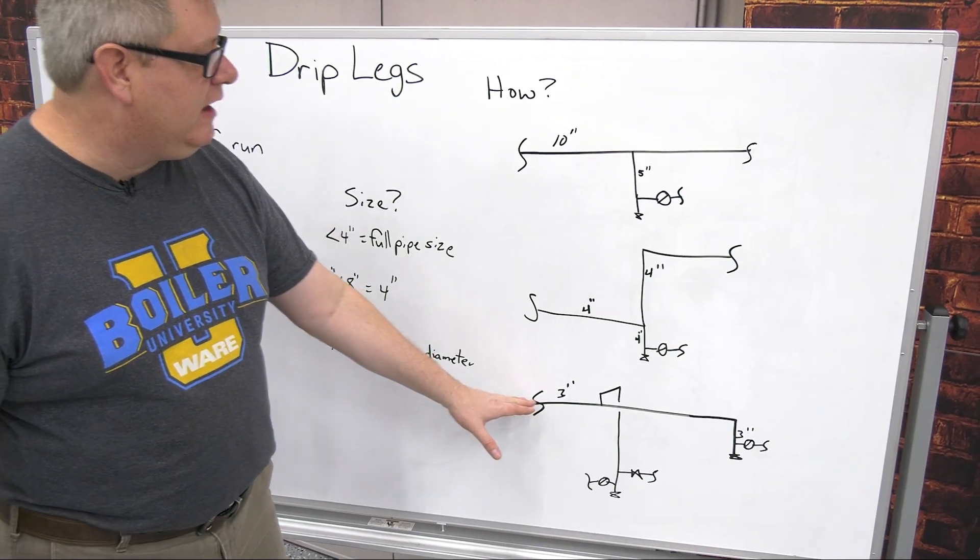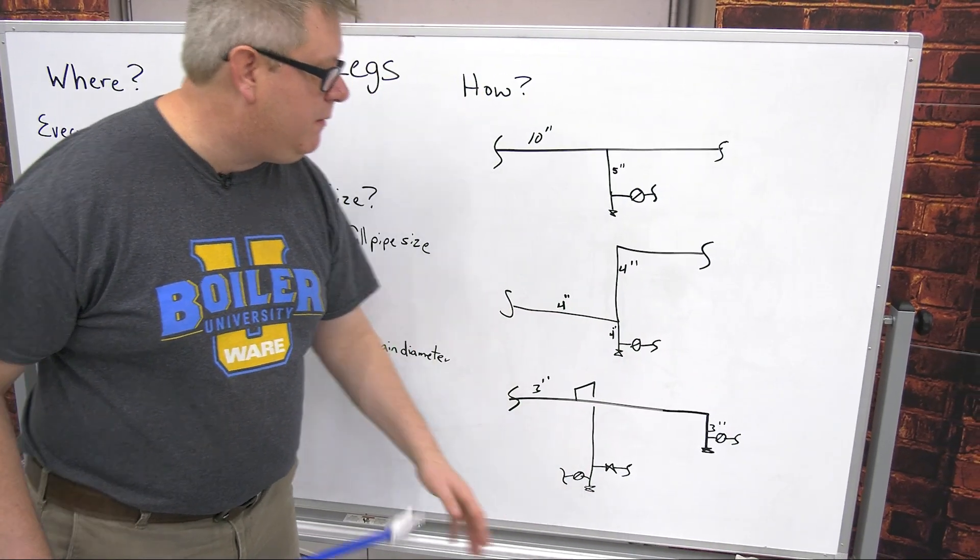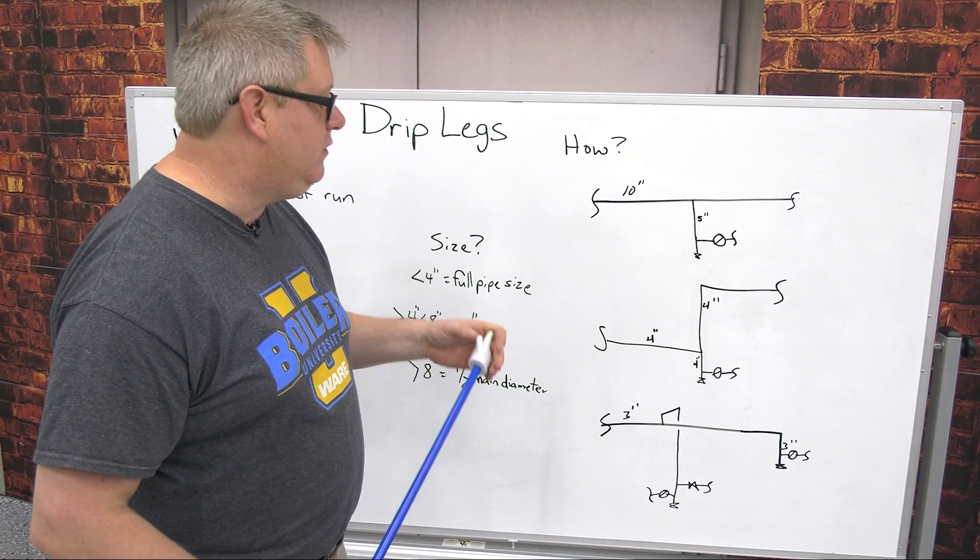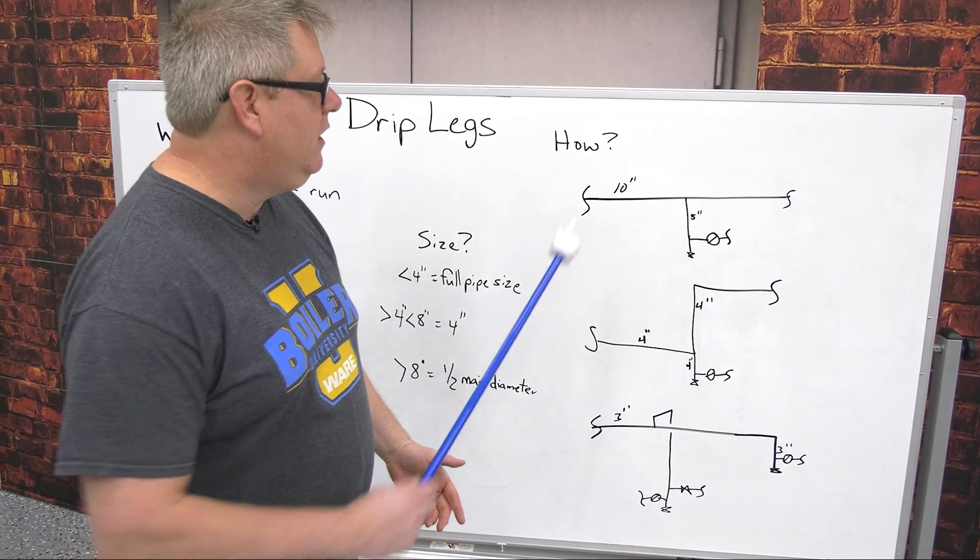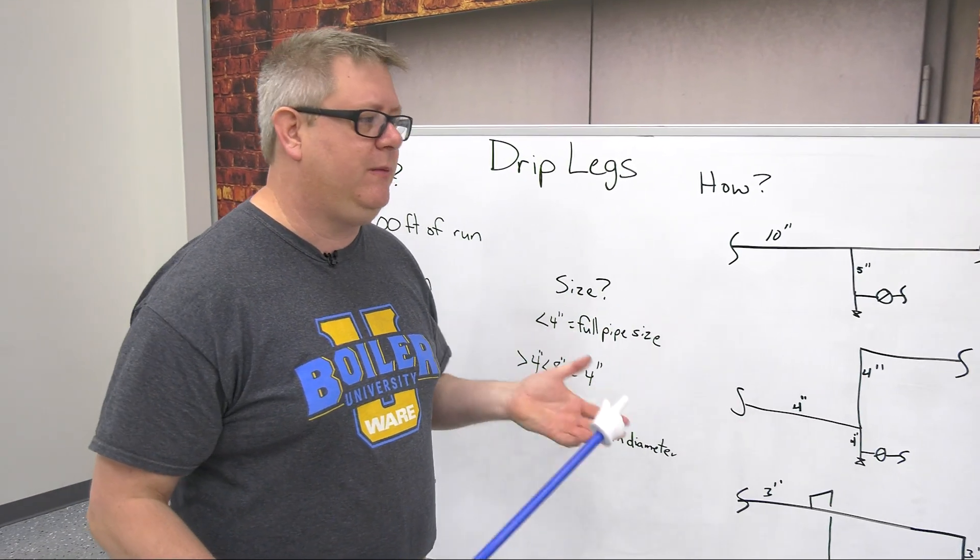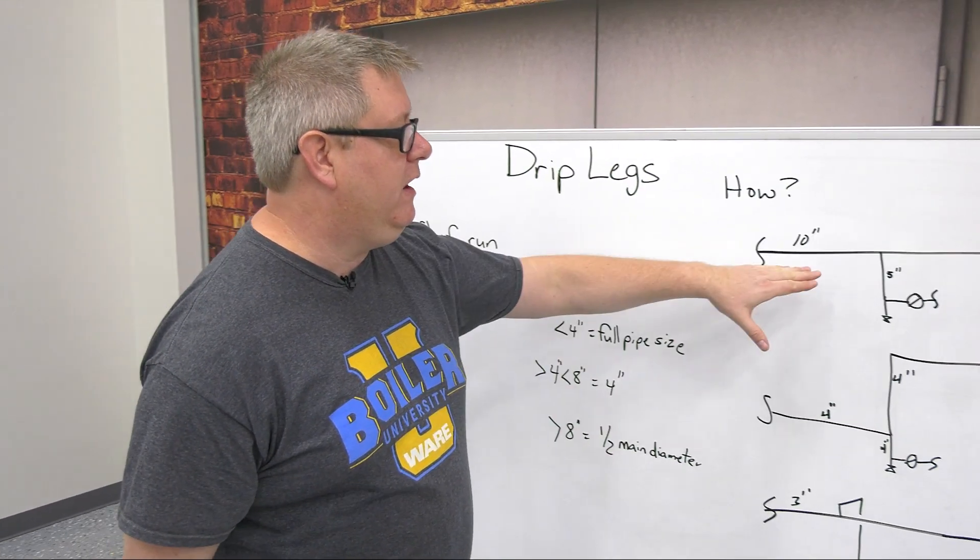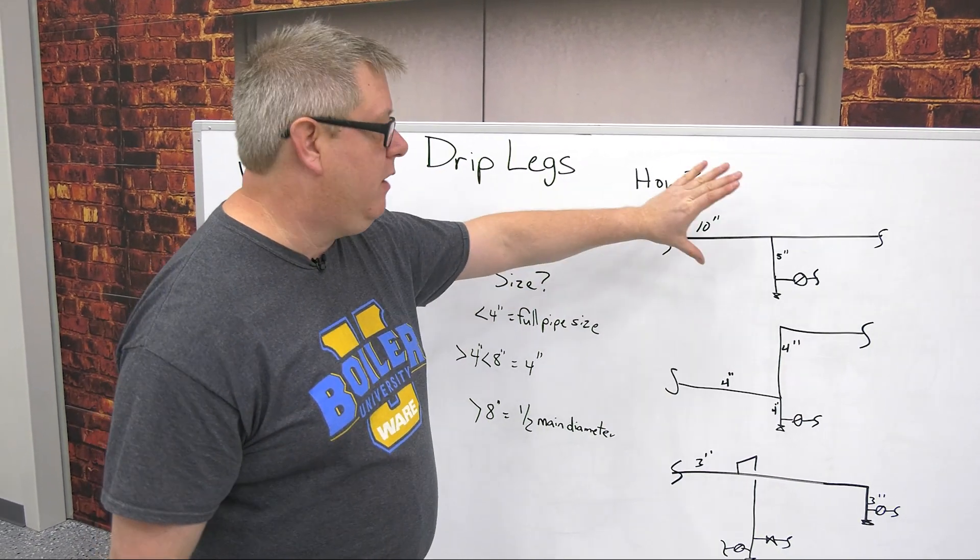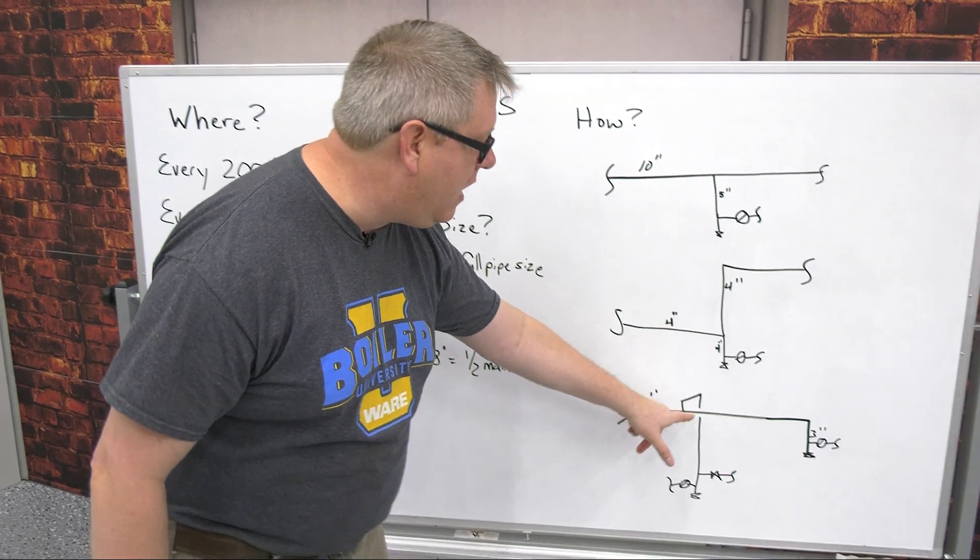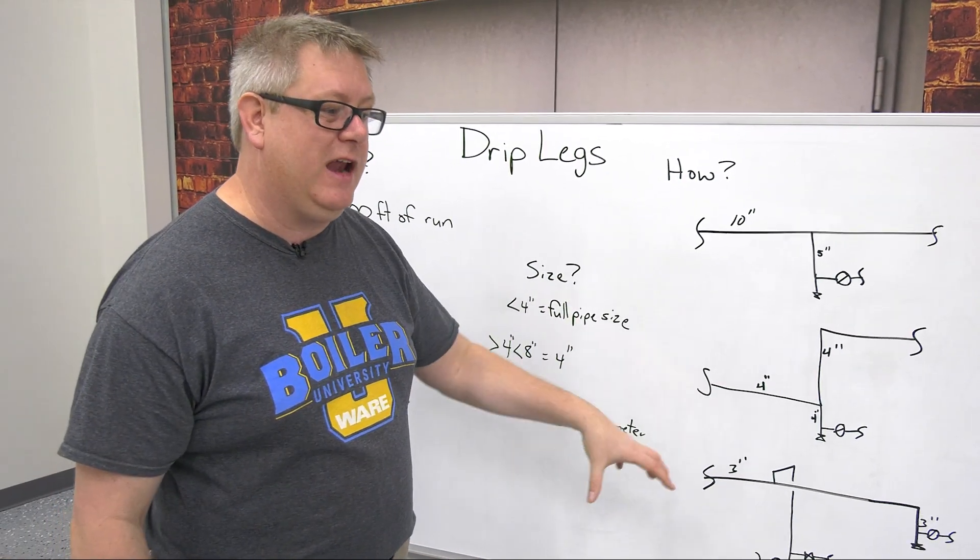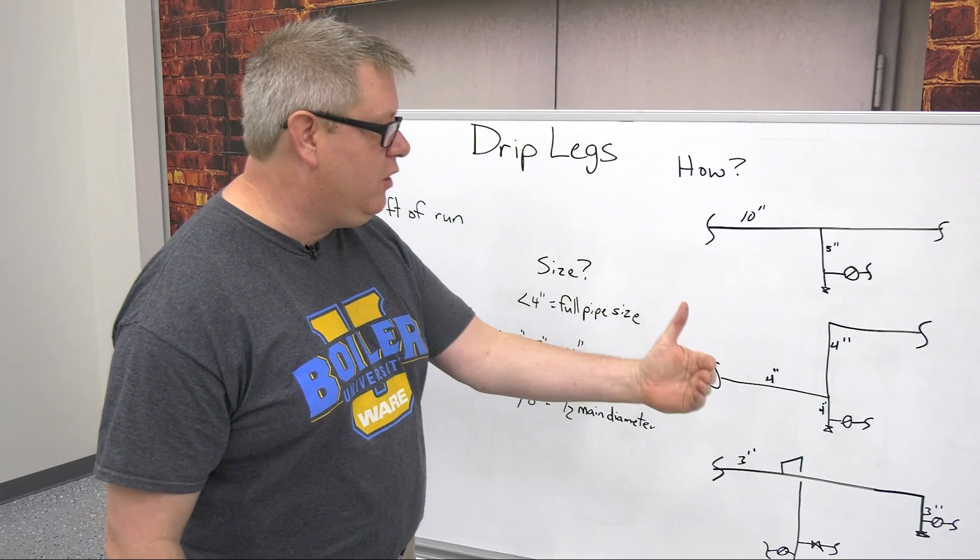In this instance, we're taking a drop off to a piece of equipment. One tendency when somebody's making a drop to a piece of equipment is to pull off the bottom of the steam line because it requires the least amount of fittings and welds. But you can see from this example, that's how you put a drip leg on a main. So if we pull off the bottom of the pipe, we're going to get all the condensate because we're creating a drip leg, but it's going to go into our equipment.